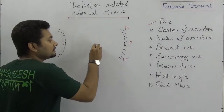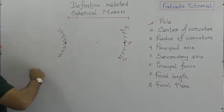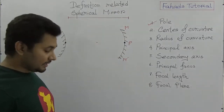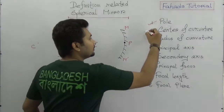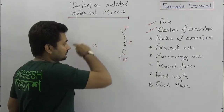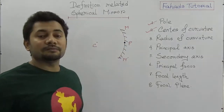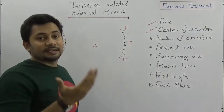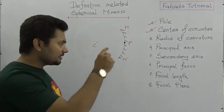The center of curvature: you saw that this point was the center of the whole sphere. This center of the sphere is known as the center of curvature, denoted by capital C. Since this mirror is a part of a sphere, it is known as a spherical mirror. This center point is the center of curvature.